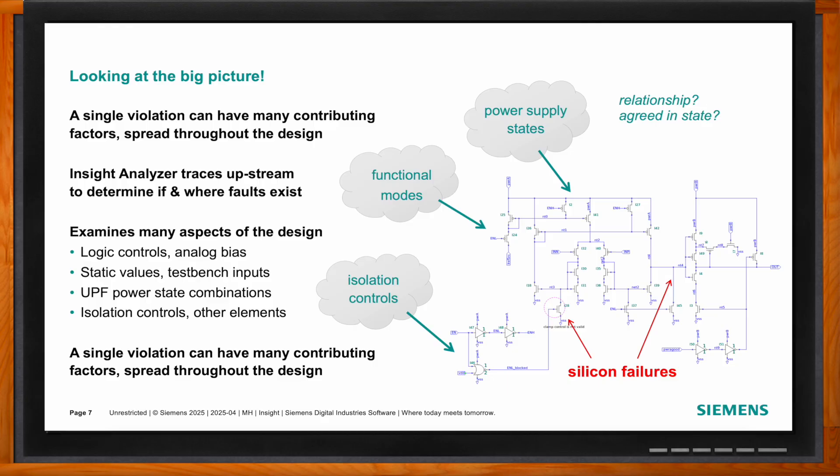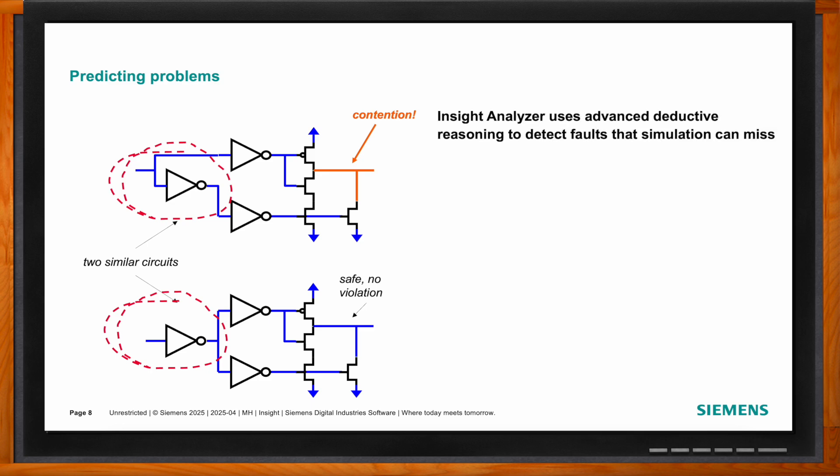Results visualization is another strong capability — the tool draws a schematic of the results, giving the user an instant picture of where their problem is, showing control signals into the circuit. Everything causing the problem is shown — annotated with logic highs and lows — so designers can make an informed decision about whether their circuit is working as intended or needs modification. This state-based analysis and circuit recognition makes Insight Analyzer a very productive tool.